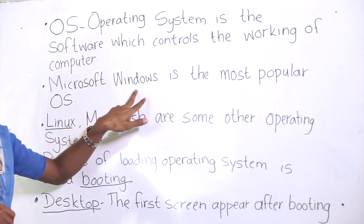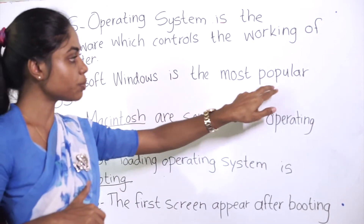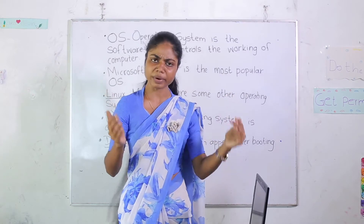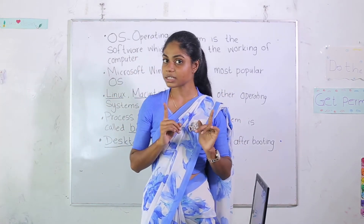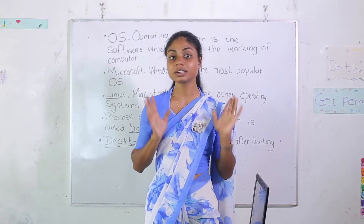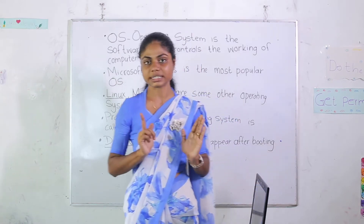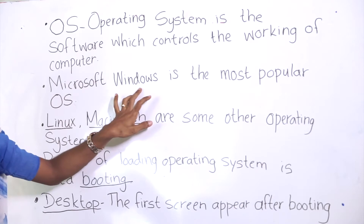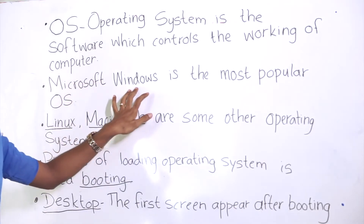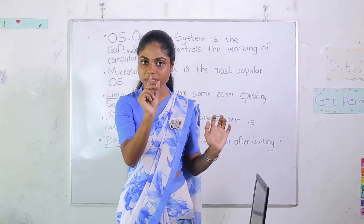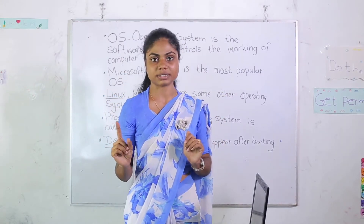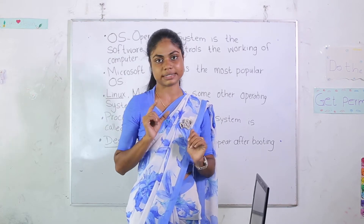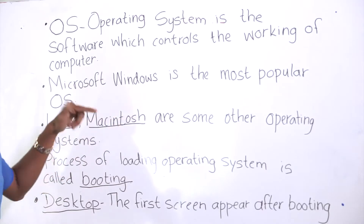Microsoft Windows is the most popular OS. There are many operating systems nowadays, but the most popular OS is Microsoft Windows. Microsoft Windows is the name of an operating system. It is not the only operating system — it is one type of operating system.